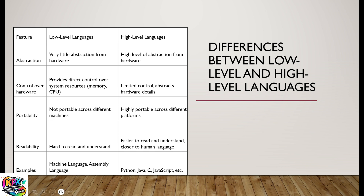Fourth, readability — low-level languages are hard to read and understand, but high-level languages are easy to read, easy to understand, and closer to human languages. Examples of high-level languages are Python, Java, C++, and JavaScript. Examples of low-level languages are machine language and assembly language.